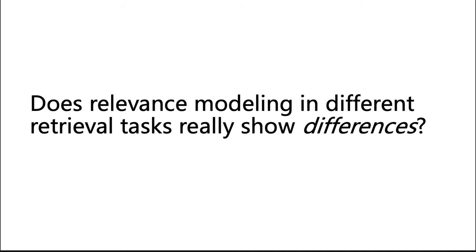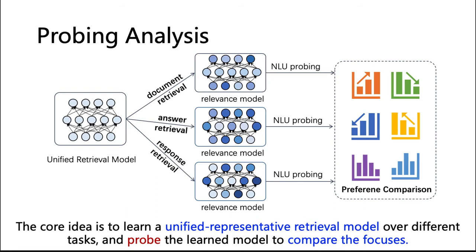This raises a question: does relevance modeling in different retrieval tasks really show differences? To answer this question, we propose to use probing analysis to study the characteristics of each retrieval task and compare them. Specifically, we take a unified retrieval model for all three retrieval tasks, learn it on each task, and then probe the learned retrieval model to compare the focuses between different relevance modeling tasks.